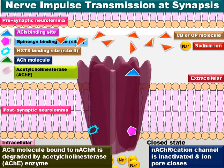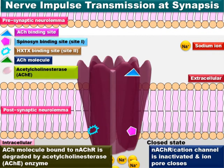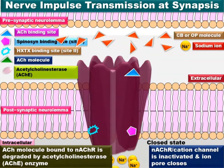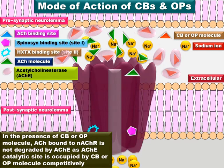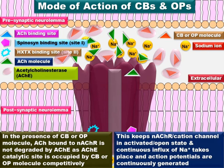When carbamate or organophosphate insecticide molecules are sprayed on insects, they enter the insect body and reach the nervous synapse in the insect nervous system. There, they compete with the acetylcholine molecules for the catalytic site of the acetylcholinesterase enzyme and occupy that catalytic site.